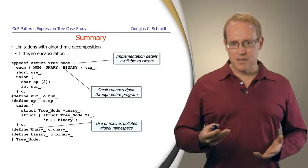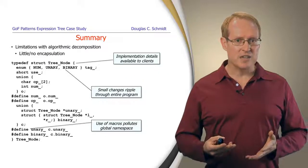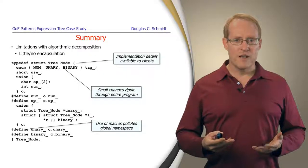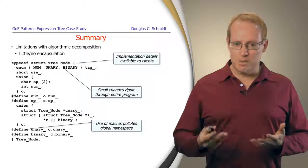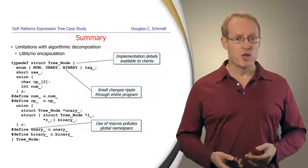Of course, we're using C-style macros here in order to simplify some of the access to the union discriminators, and that tends to be problematic in large-scale systems where we have to worry about pollution of the global namespace.